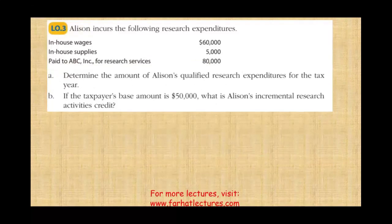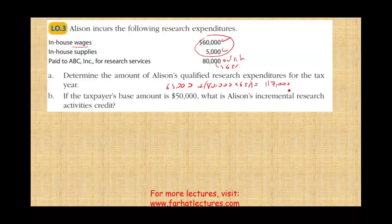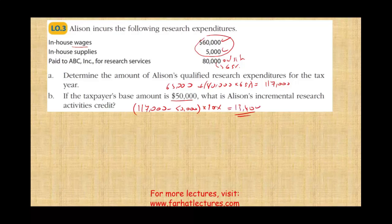Allison incurs the following research expenditures: in-house wages and supplies are fully qualified at 100%. Paid to ABC Inc. for research services — that's an outsider, so only 65% qualifies: $65,000. The total qualified research expenditure is $65,000 plus 65% of $80,000, giving us $117,000 of qualified research expenditure. If the taxpayer's base amount is $50,000, the incremental research credit is: $117,000 minus $50,000 times 20% equals $13,400.